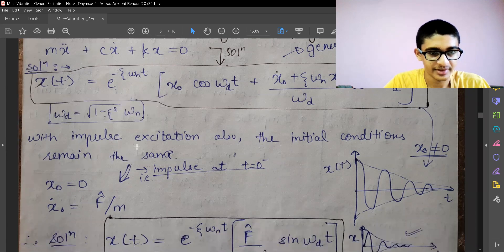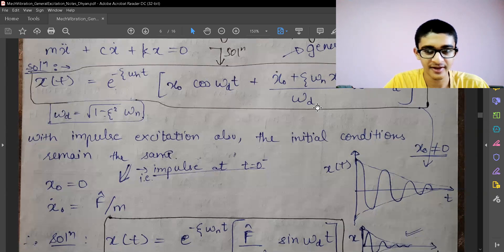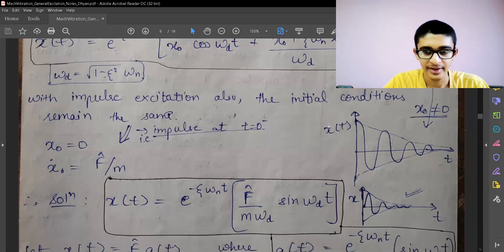With impulse excitation also, the initial conditions remain the same which we have seen earlier: x0 is 0 and x0 dot is f by m. We use these initial conditions and put them in the general response, and we have got the solution for the impulse which has considered damping in it.